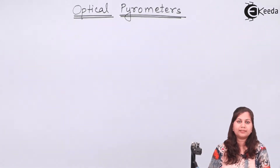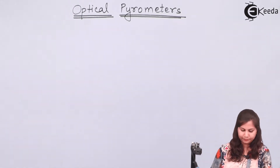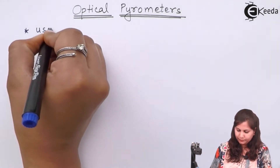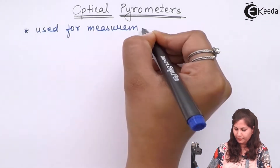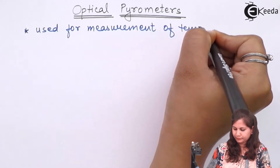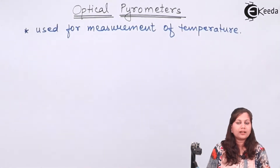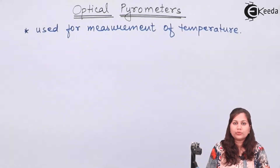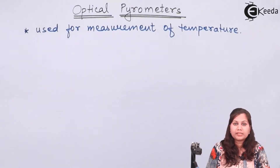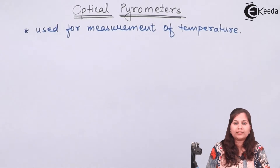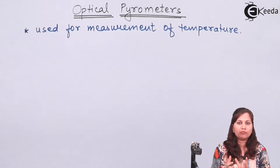Optical pyrometers are devices which are used for the measurement of temperature. There are various other devices also used for temperature measurement like thermocouple, RTD, thermistors, and thermostats. But all these devices are contact type devices.